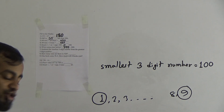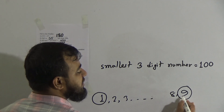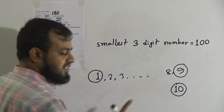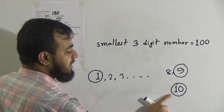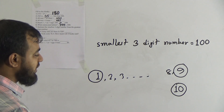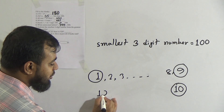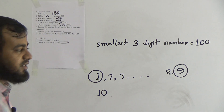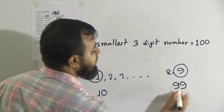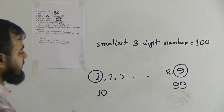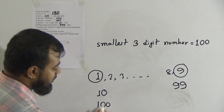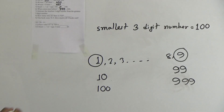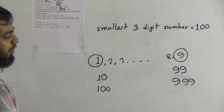The smallest 2-digit number is 10, because after 9 comes 10 — the first double-digit number. The greatest 2-digit number is 99. Similarly, the smallest 3-digit number is 100, and the greatest 3-digit number is 999.